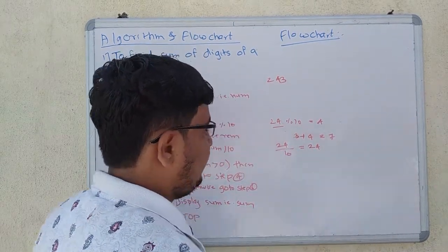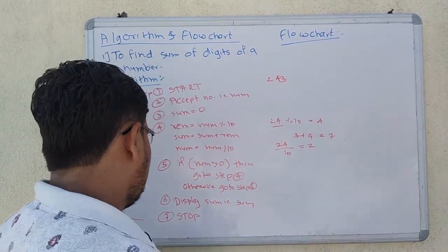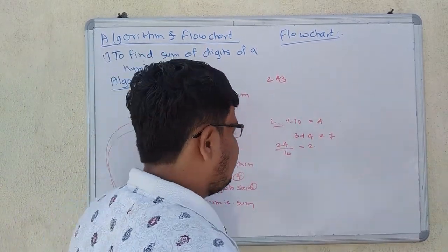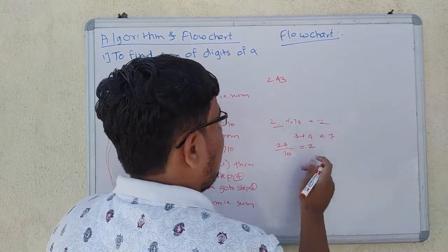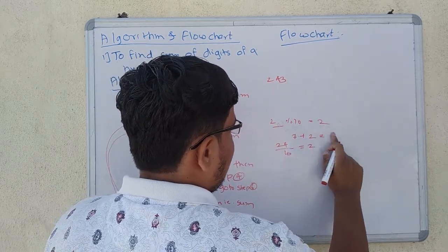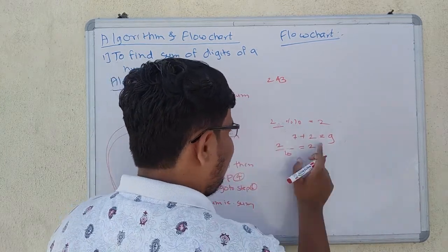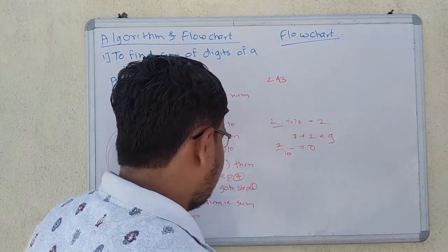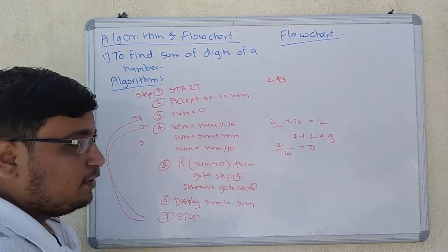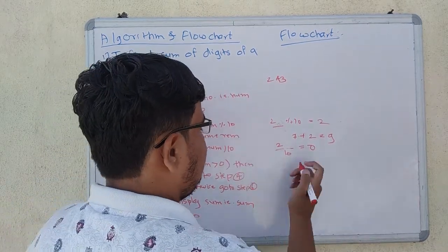Now I divide 24 by 10, giving 2. I check that 2 is greater than 0, so I go to step 4. Then 2 mod 10 gives remainder 2. My sum value is 7, my remainder value is 2, so my sum value is 9. After that, I divide 2 by 10, giving 0. Now since num is 0, I go to step 6. My sum value is 9, so I display sum, which is 9.